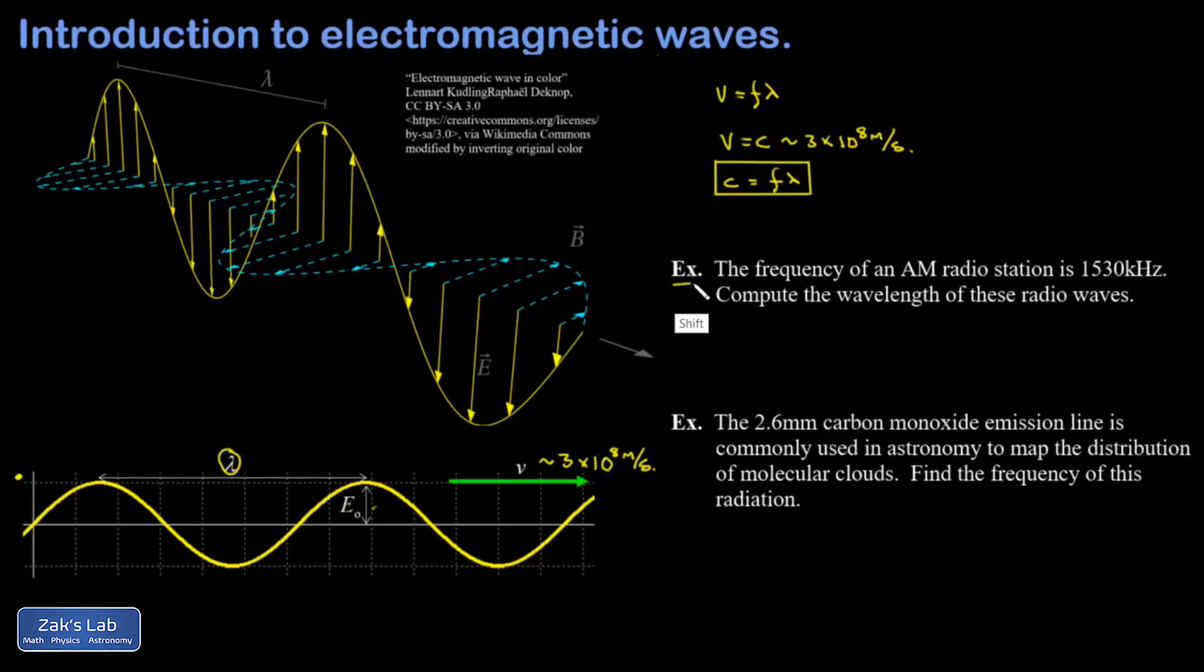This equation allows us to relate the frequency and the wavelength for electromagnetic waves. So here's a couple short examples of how to do this. In the first example, we're told the frequency of an AM radio station is 1,530 kilohertz.